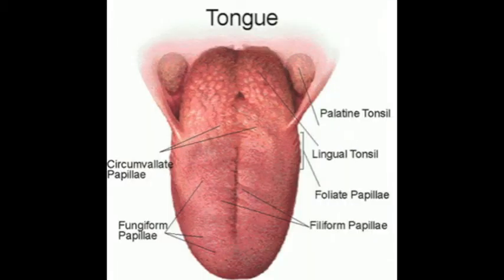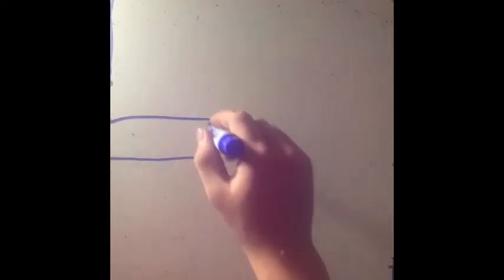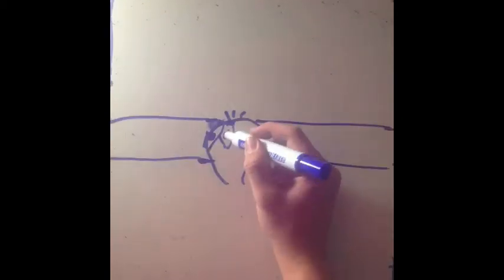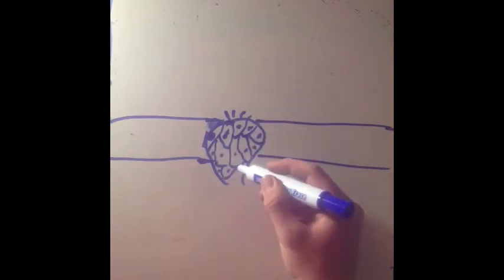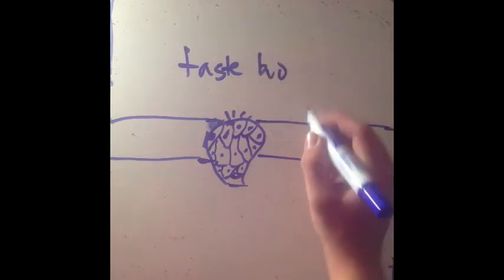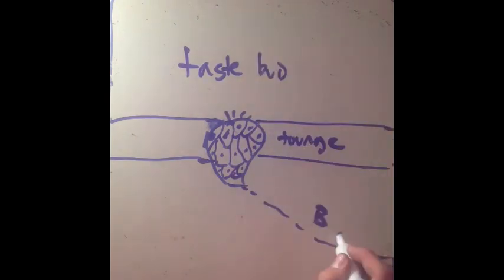Lastly, taste. We taste through small bumps on our tongue called papillae, or taste buds. These are mostly located on the tongue, but some are on the roof and back of your mouth and throat. There are between 2,000 and 5,000 taste buds on the front and back of your tongue. Each bud has 50 to 100 receptor cells on it.